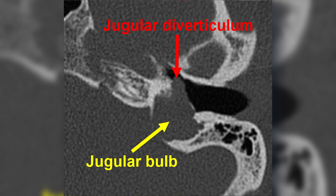Jugular bulb diverticulum is a congenital vascular anomaly characterized by a sac-like or digitiform protrusion originating from the jugular bulb. It is generally an incidental and asymptomatic finding. In symptomatic cases presenting with pulsatile tinnitus, it is usually associated with a dehiscent jugular bulb.